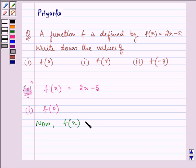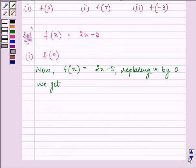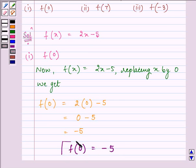Now f(x) is given to us as 2x - 5. We will be replacing x by 0 and on doing so we get 2 × 0 - 5 which will give us the value as -5. So for the first part, the value of f(0) is -5.